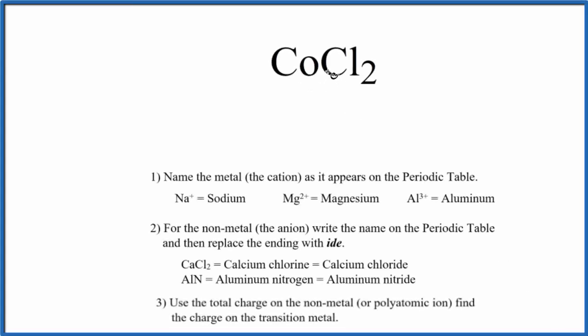To write the name for CoCl₂, we have nonmetals with the chlorine and cobalt, which is a transition metal. When we have a metal and a nonmetal, that's an ionic compound. We're going to use these rules to name an ionic compound with a transition metal.